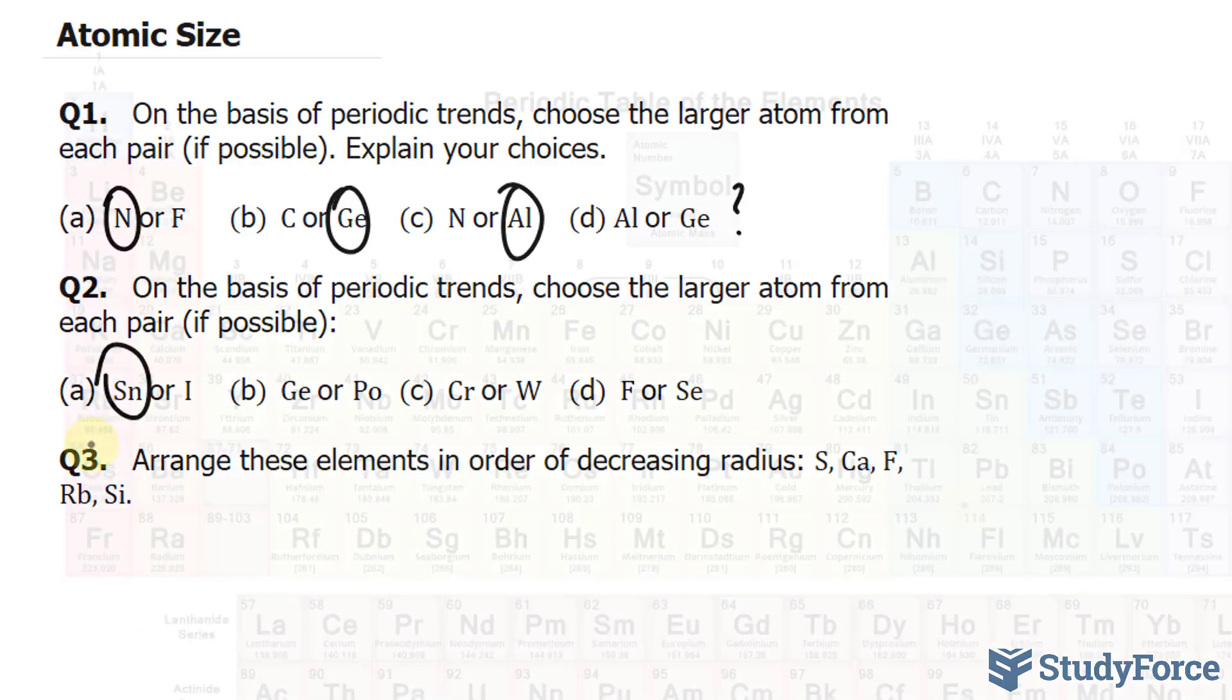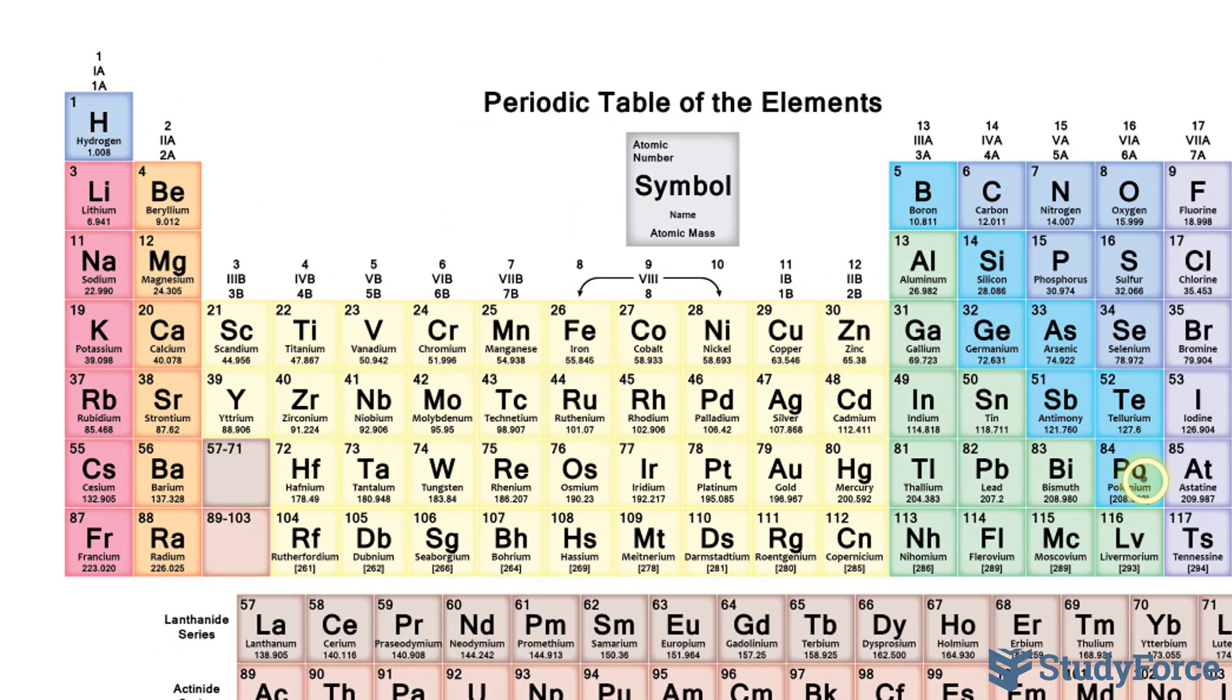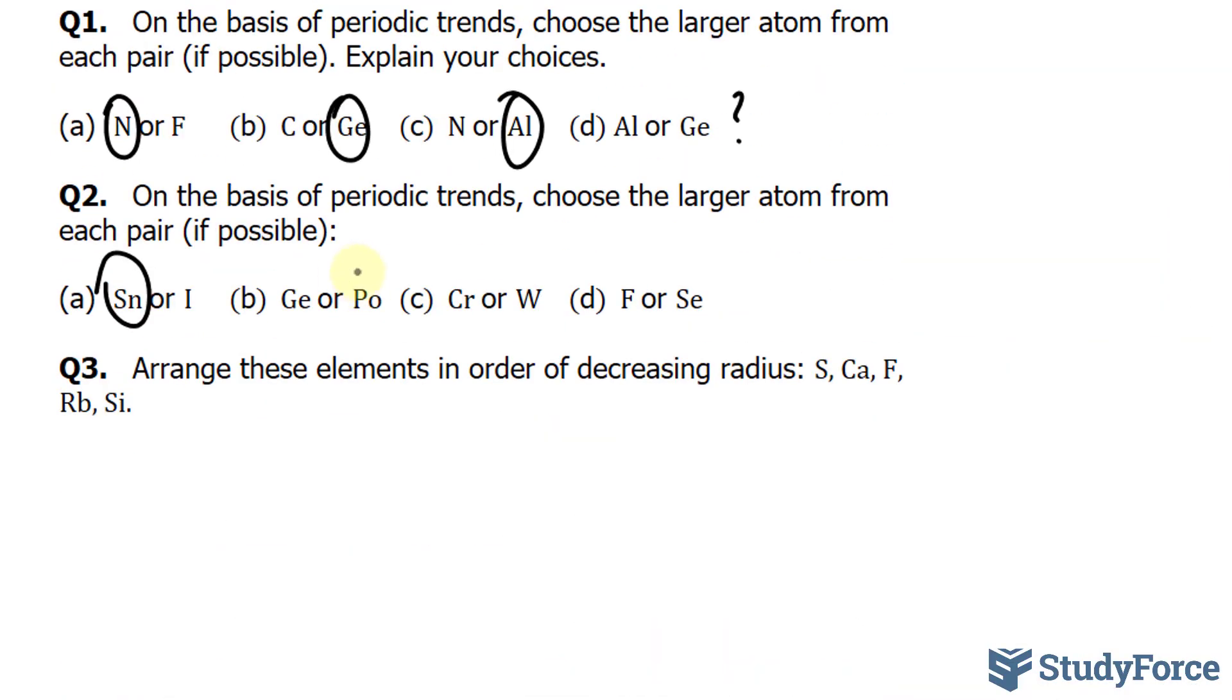Germanium versus polonium. Germanium is right here, and polonium is situated there. We're moving down a column and to the right. Moving down a column automatically makes the atom bigger. So we know that polonium is larger than germanium, even though it's moved to the right of the row.